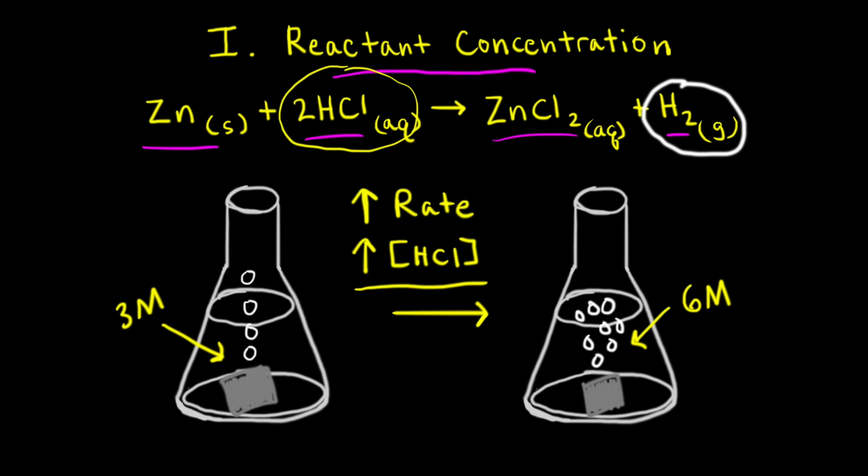As the concentration of hydrochloric acid increases, there are more acid particles to collide with the piece of zinc. Therefore, as the concentration of hydrochloric acid goes up, the frequency of collisions increases, and the rate of the reaction increases.